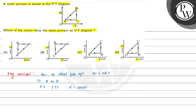In the B to C process, we can see that temperature is equal to constant — this is an isothermal process.